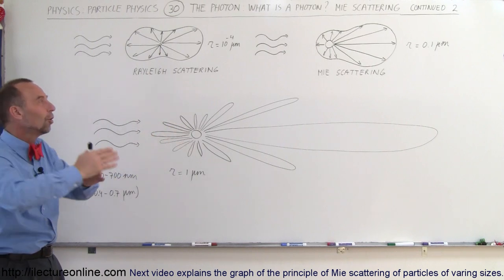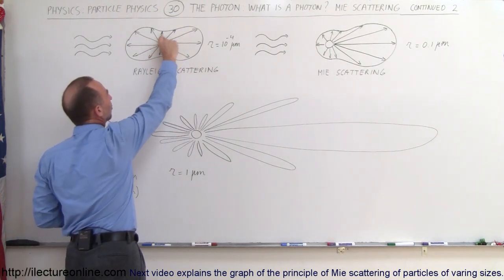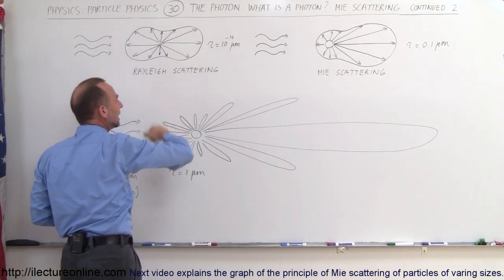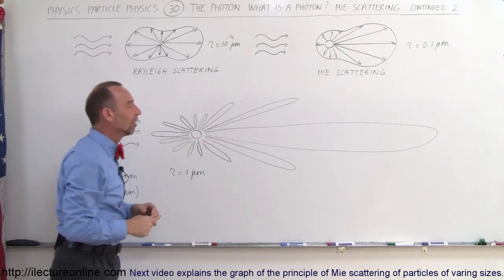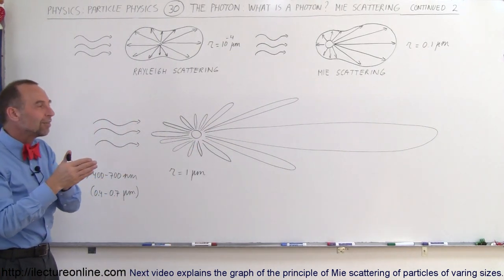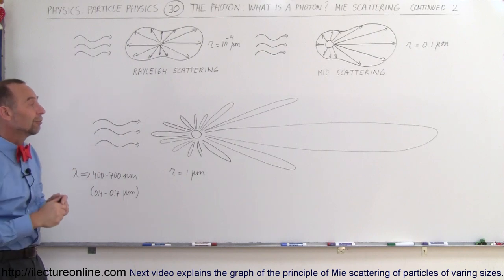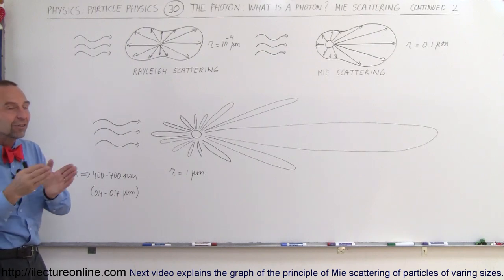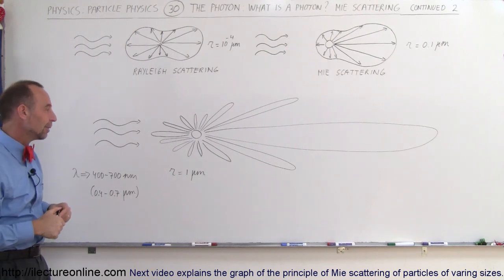But there's actually what we call an interference pattern that develops because of the scattered waves then beginning to interfere with each other. And you have these interference patterns when they're out of phase, when they're getting scattered off the particles.